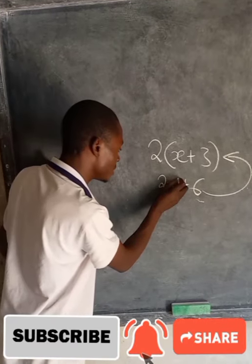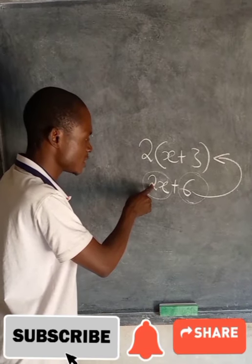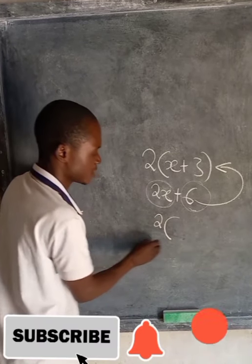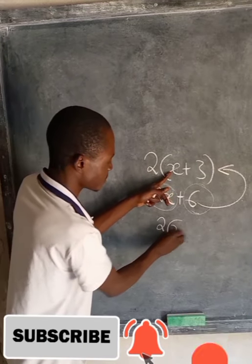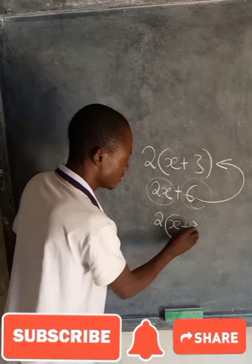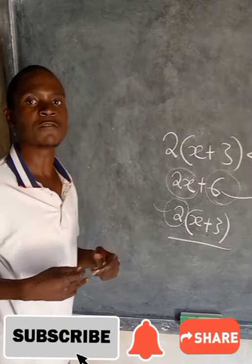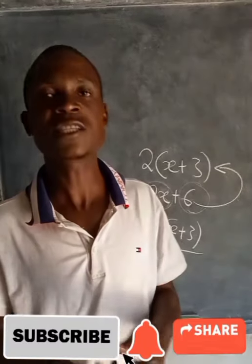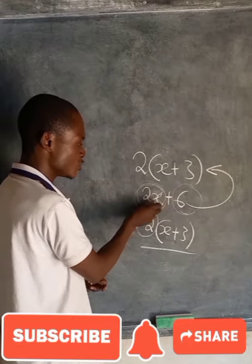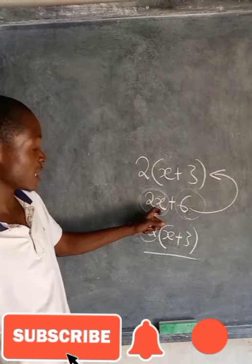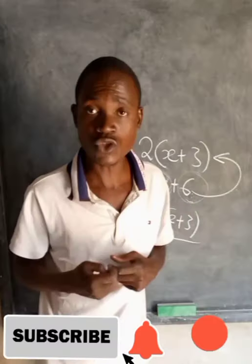How do we factorize? We need to find the common thing which can go into both terms without leaving a remainder. In this case, the 2 can go into 2 and the 2 can go into 6. So we can say 2 brackets. 2 into 2x gives x, and 2 into 6 gives 3. So we have factorized. This number which is outside is what we are calling the common factor. When I say let's find the common factor, I'm simply asking you to find the number or letter that can go into the two terms you are given without leaving a remainder.